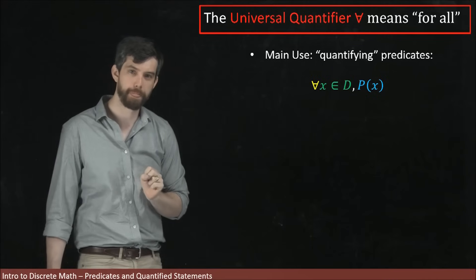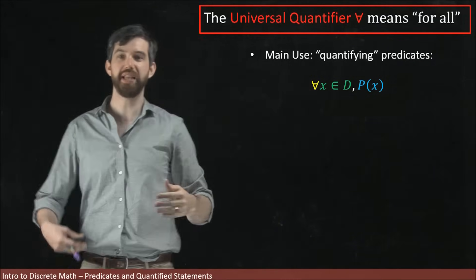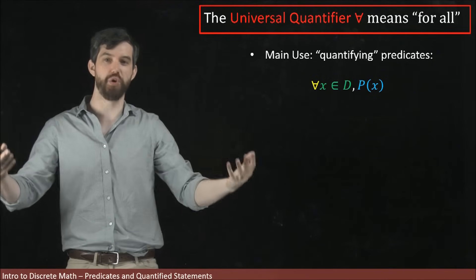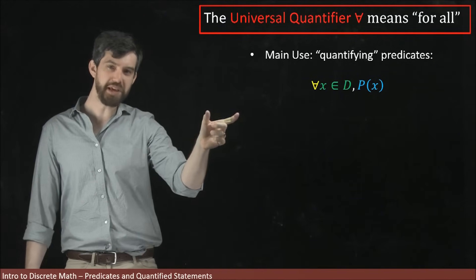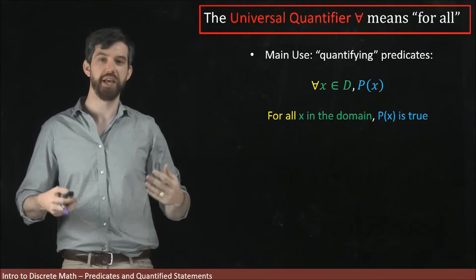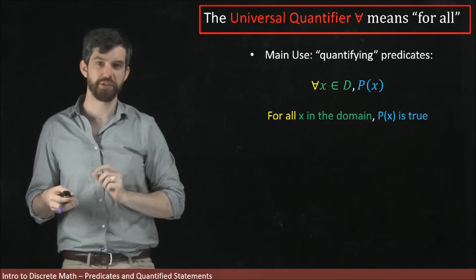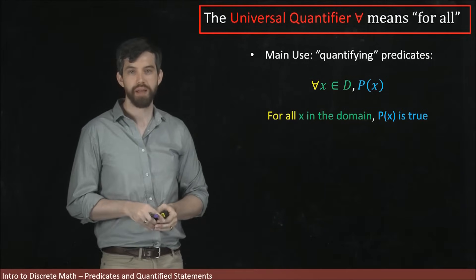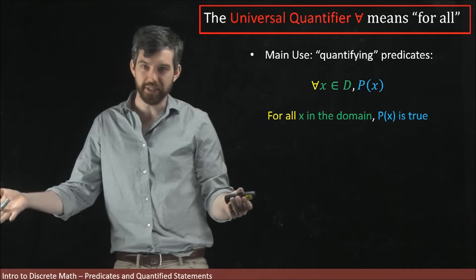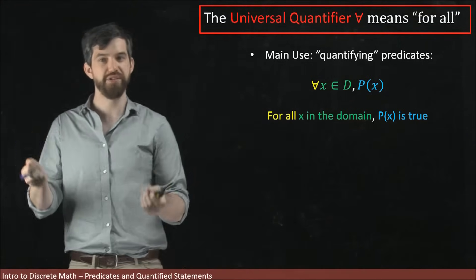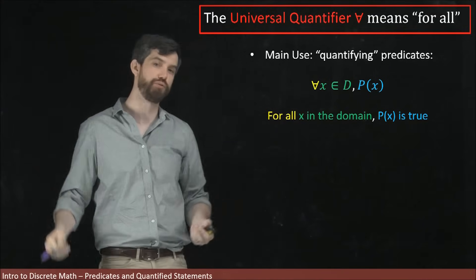This collection of symbols works as follows: first, we have the upside-down A, meaning 'for all.' Then we have X inside of the domain, so this is saying 'for all X's in the domain' — for all input values. Then we have our predicate P of X, so it says 'for all input values, this predicate P of X must be true.' Sometimes, given a predicate and domain, every single value of the input is going to be true.